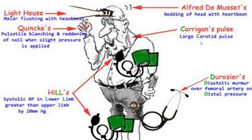Corrigan pulse is a prominent carotid artery pulse. Hill's sign is a difference between blood pressure in the upper extremity and lower extremity of more than 20 mmHg. If the difference is 20 mm it is mild, 40 mm it is moderate, and more than 60 mm it is severe aortic regurgitation. Duroziez's murmur is a diastolic murmur heard over the femoral artery due to regurgitation of blood back towards the heart. If you palpate the femoral artery, you get a very prominent pulsation called pistol shot femoral.